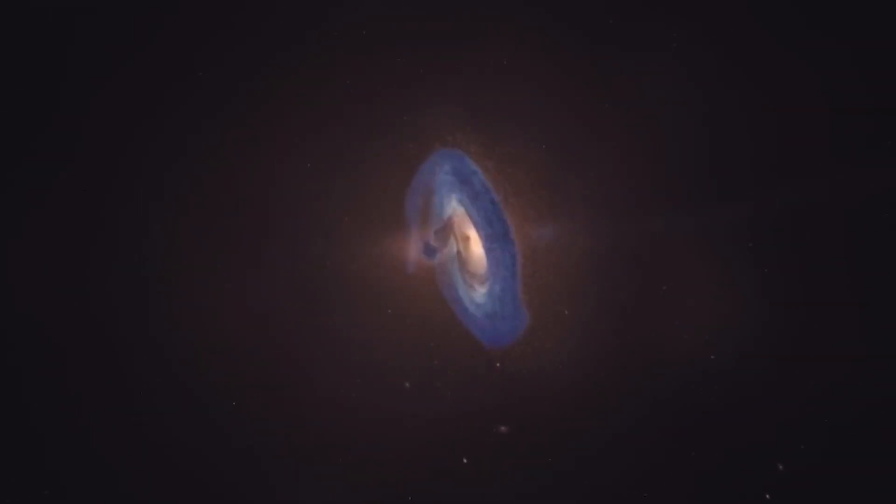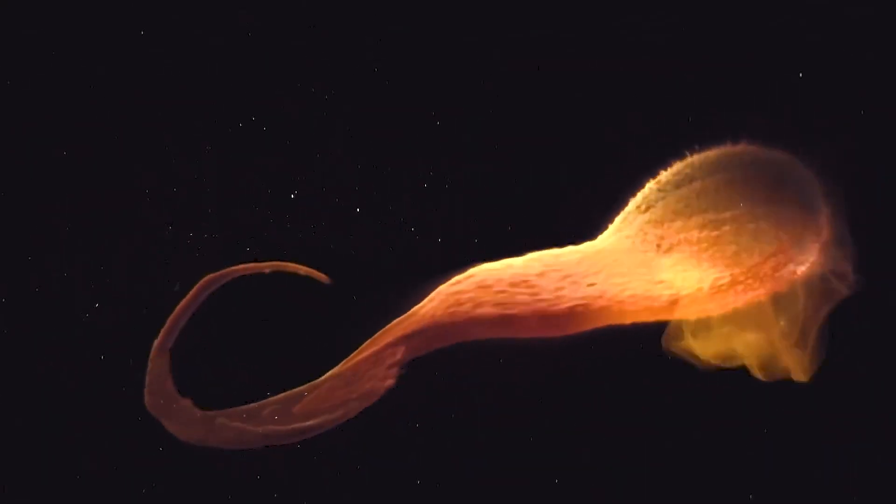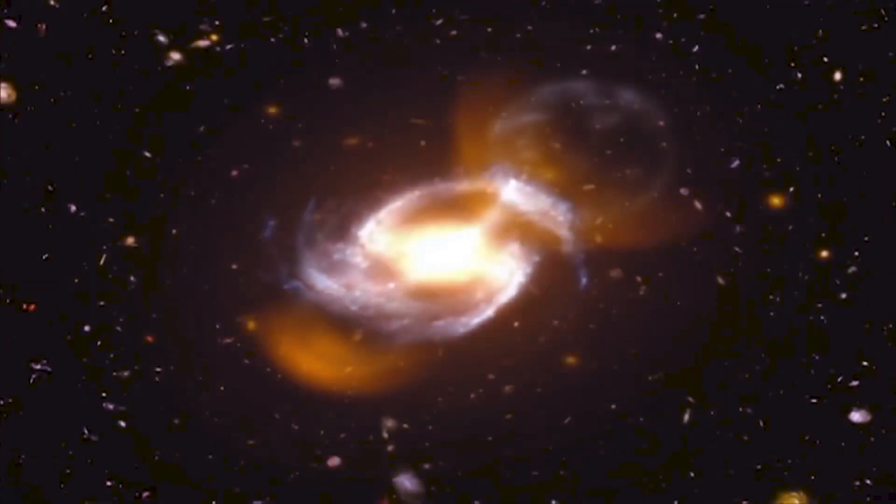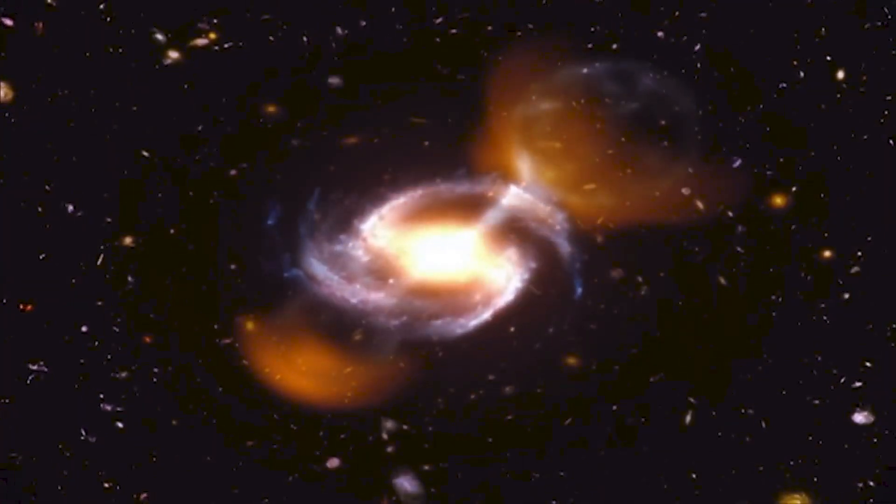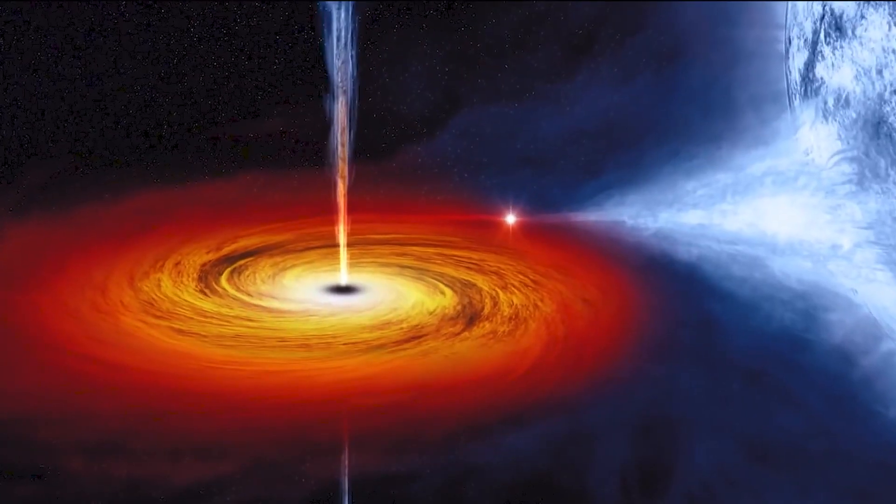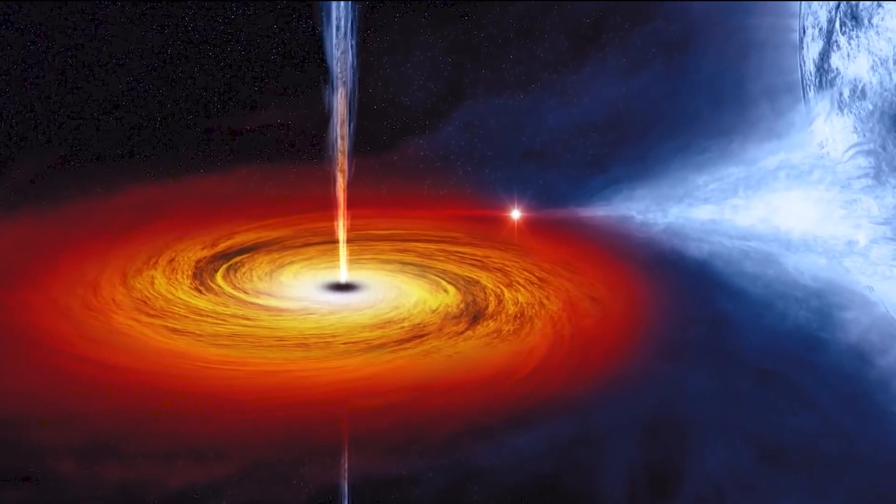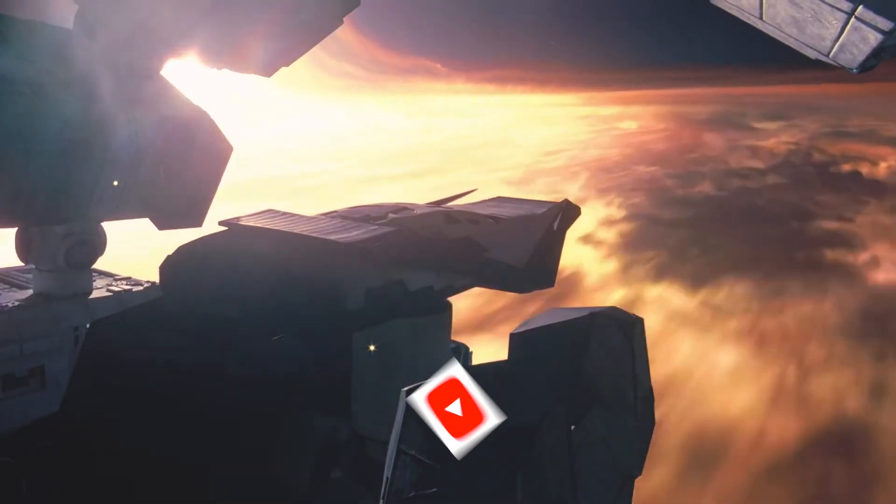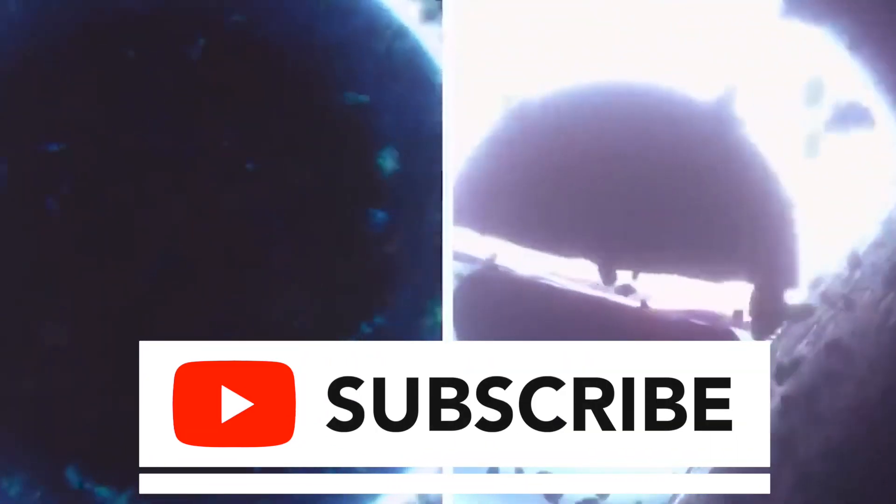The understanding of black holes has been greatly facilitated by indirect observations. One of the fascinating phenomena is gravitational lensing, which occurs when light from background stars or galaxies passes near a black hole. The immense gravity of the black hole bends the path of light, creating a lensing effect that allows astronomers to detect and study black holes indirectly.